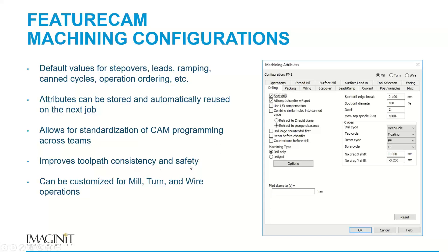This also improves consistency and safety — you can make sure toolpaths are safe and won't damage the tool or machine. You can apply these attributes to turning operations and wire operations as well. You can have multiple configurations — for example, specific settings for your three-axis mill versus your five-axis mill. Each CNC machine could have its own set of attributes used every time you create a program for that specific controller.